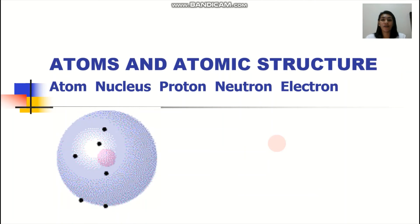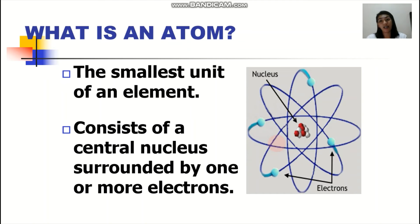Now, basic recap of your atoms and the subatomic particles. You know this already. Your atom is the smallest unit of an element. And it consists of a central nucleus composed of your positively charged protons and your neutrally charged neutrons. And you have now electrons circling around them. I apologize for the wrong model. Hindi ganito yung itsura talaga ng atomic model natin.